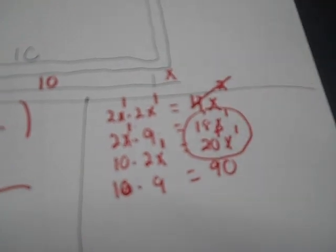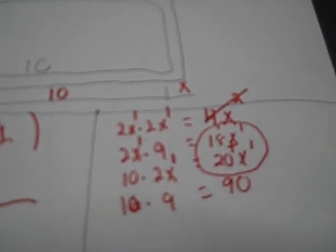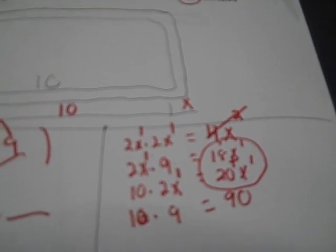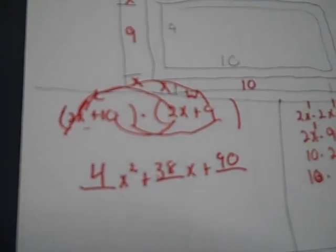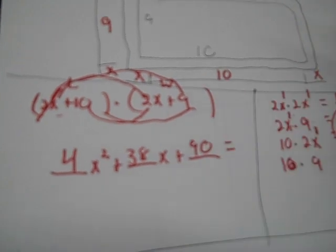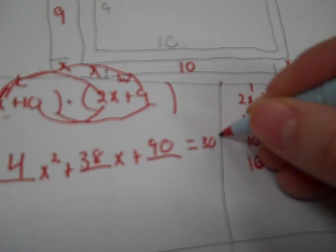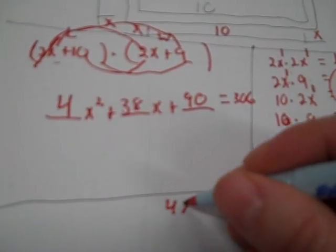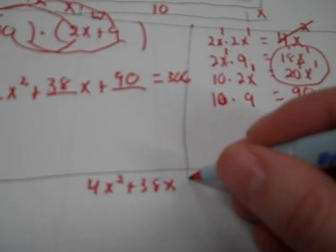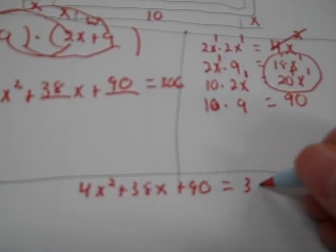Important: you add the 18x and 20x — don't multiply them, that's a common mistake. So the simplified expression is 4x² + 38x + 90. Since length times width equals area, and our area is 306, we set up the equation: 4x² + 38x + 90 = 306.